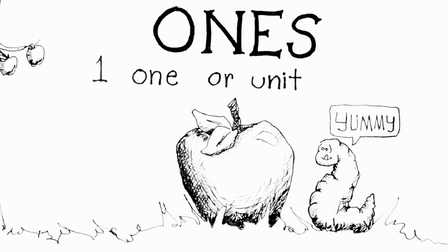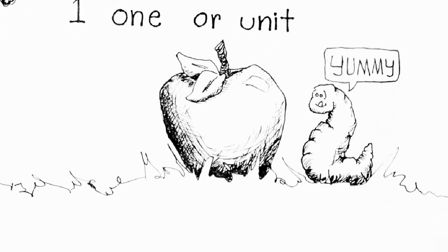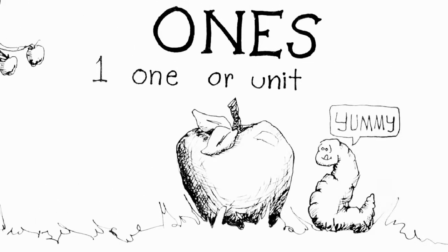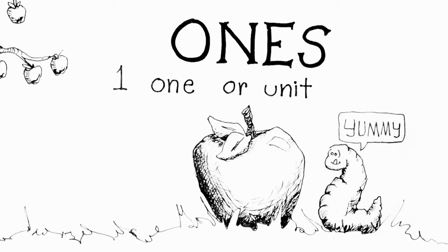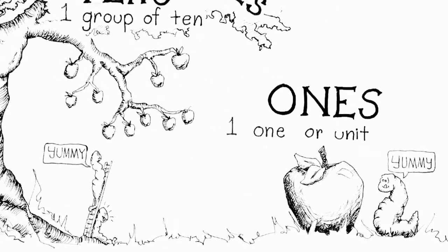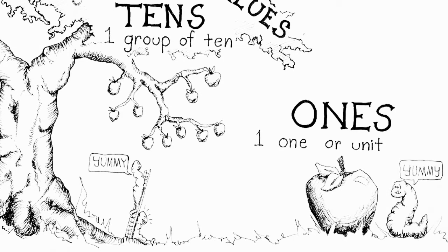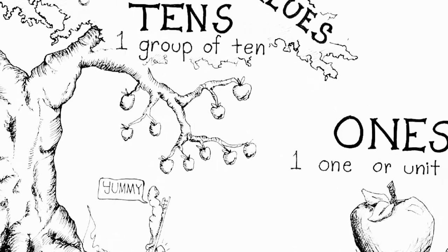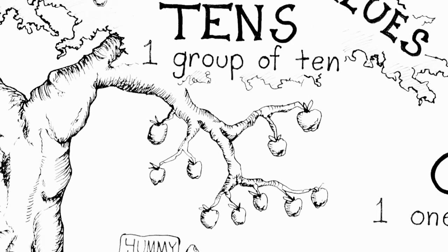The first place value is the ones place — it's the easiest one and you're probably already familiar with it. If we put a one in the ones place, it would be equal to one unit, or one thing. Today we're going to use apples, so that one would be equal to one apple. But if we move that one a place value over to the left, it's now in the tens place and that one is no longer equal to one — it's equal to one group of ten. We can draw that like one branch that has 10 apples on it.